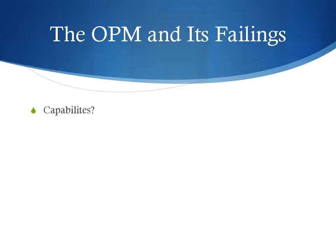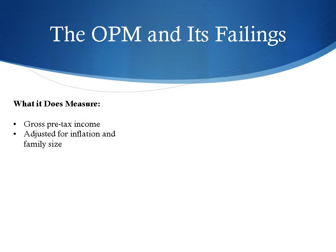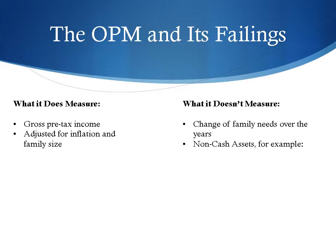Currently, the United States government does not take into account capabilities when it looks at poverty, instead relying on a measurement that considers only gross pre-tax income. The Official Poverty Measure, or the OPM, defines a threshold for gross pre-tax income that is three times the lowest cost food plan as defined by the government. It is adjusted for inflation and family size, but remains constant over time and has not changed as standards of living rise or fall. The OPM is woefully inadequate today — its basic assumption is not even accurate, as families now spend on average one-sixth of their income on food, not one-third.